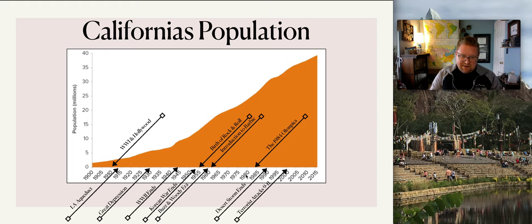Looking at California's indigenous people — native people have lived in California for over 10,000 years. Before the Spanish invasion of 1542, there were believed to be between 350,000 to 700,000 indigenous people in California. We don't have precise records because there were no social security numbers or birth certificates, but they believed there could have been upward of 700,000 indigenous people. Due to disease and violence, the population was reduced to 25,000, because most of those people were in captivity.